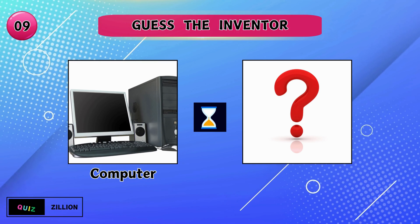Who developed the solar panel? The solar panel was found by Russell Ohl. Who innovated the artificial heart? The artificial heart was discovered by Robert Jarvik.